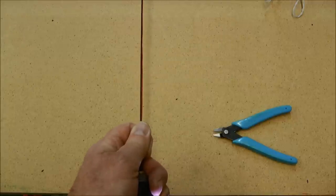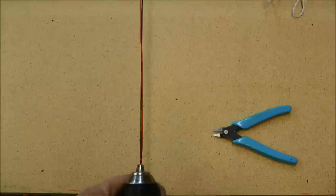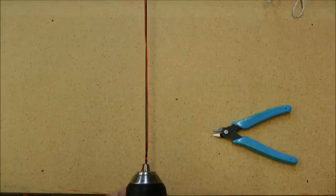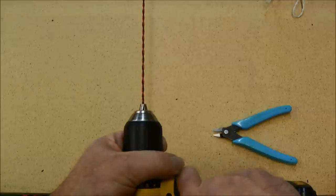Now, at this point we want to hold tension on it, but as we twist we want to let the drill come in because that wire is going to shorten as you twist it. You can see the drill now moving in as I twist the wire.